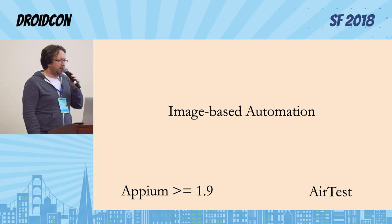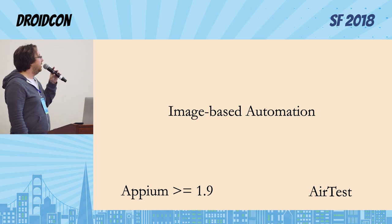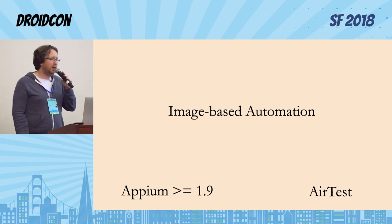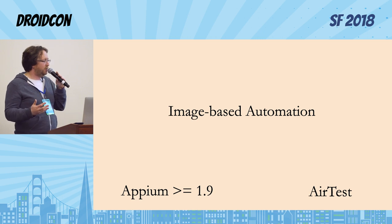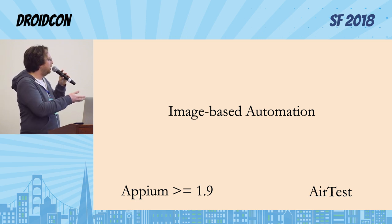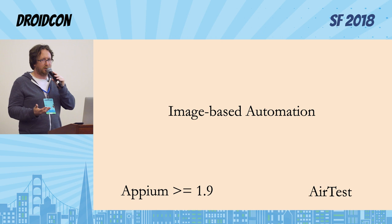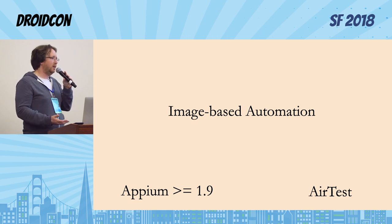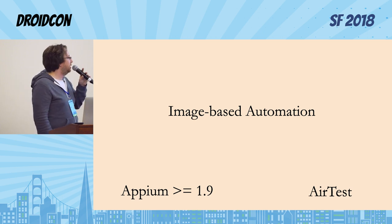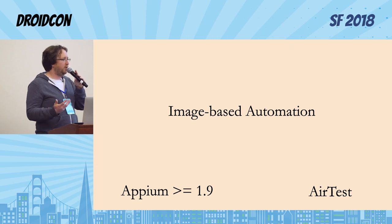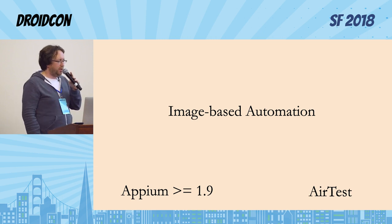There's a new direction happening, particularly around games and cross-platform testing and more high-precision testing, which is image-based automation. As of Appium 1.9, there are new image capabilities in Appium itself, which is really exciting — you're able to write tests using image matching. And there's a really great project called Airtest that is all about image-based automation, especially for gaming. It's a little more sophisticated than Appium, but it's a great place to start and it's also open source.